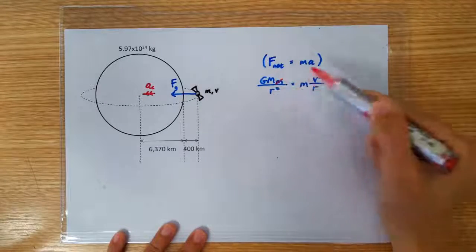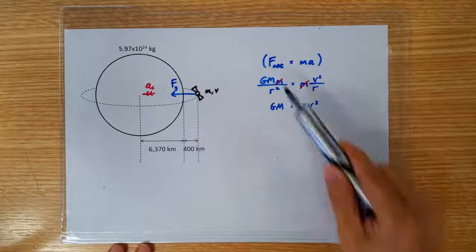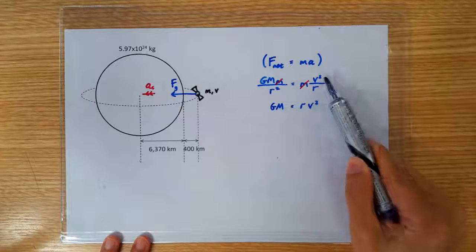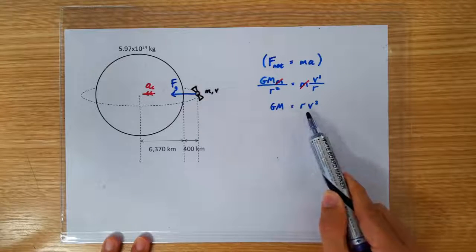Once again, the little mass is irrelevant. We throw the r squared over to the other side, and we get GM equals rv squared.